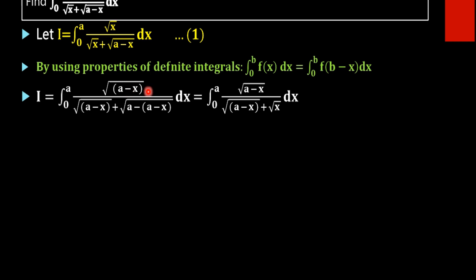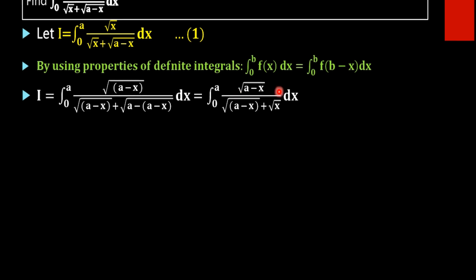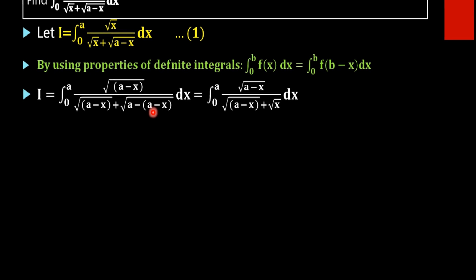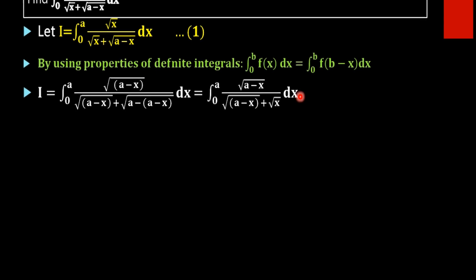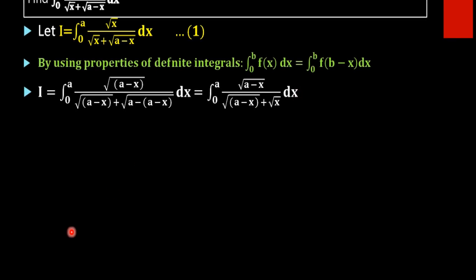We get i equal to integral 0 to a of root of (a minus x) divided by root of (a minus x) plus root of (a minus (a minus x)) dx. Now a minus a becomes 0, and minus of minus x becomes plus x, giving root of (a minus x) divided by root of (a minus x) plus root x dx.